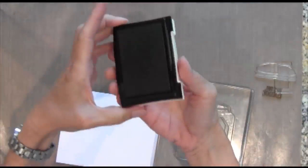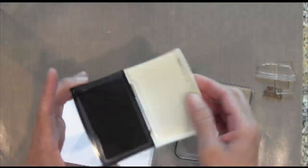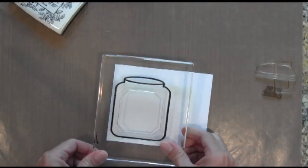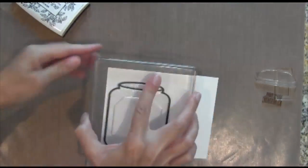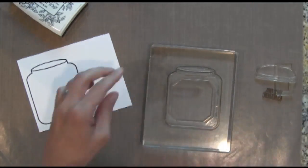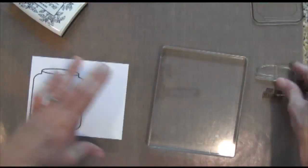So I started off stamping all these different parts out using VersaFine black ink, which I find to be a really nice ink for clear stamps. You get a really nice solid image. So I'm going to stamp all these different pieces out.